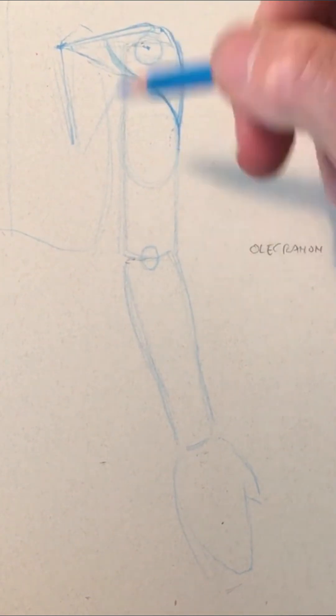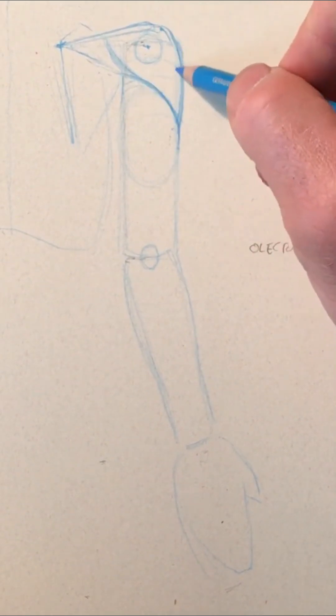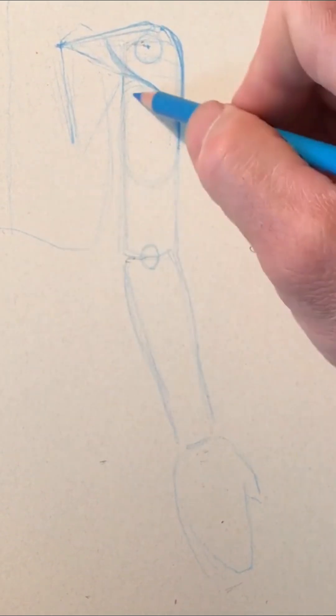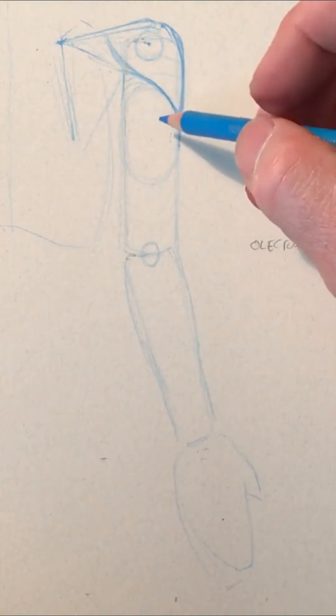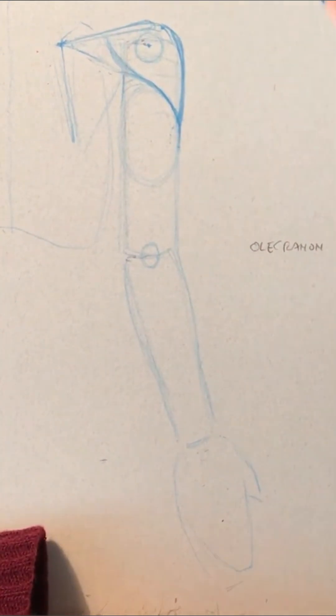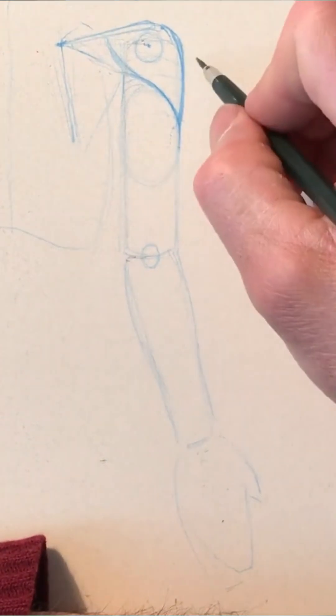deltoid. So now, once I have the volume of the deltoid here, I have more or less positioned the form of the tricep. Tricep means three heads, so the tricep is going to be made